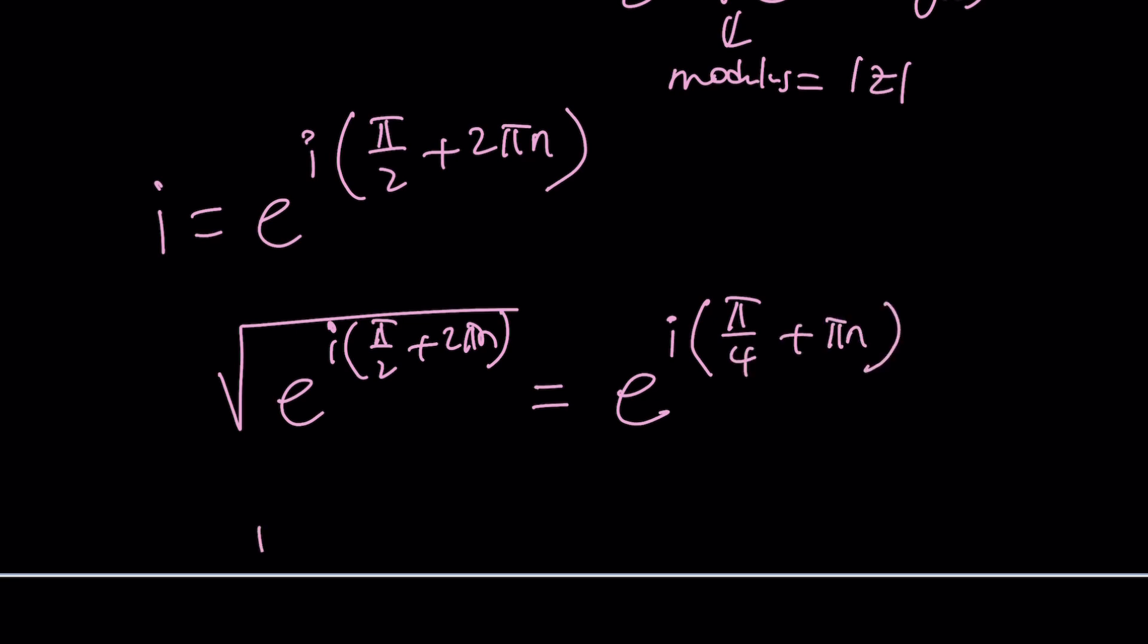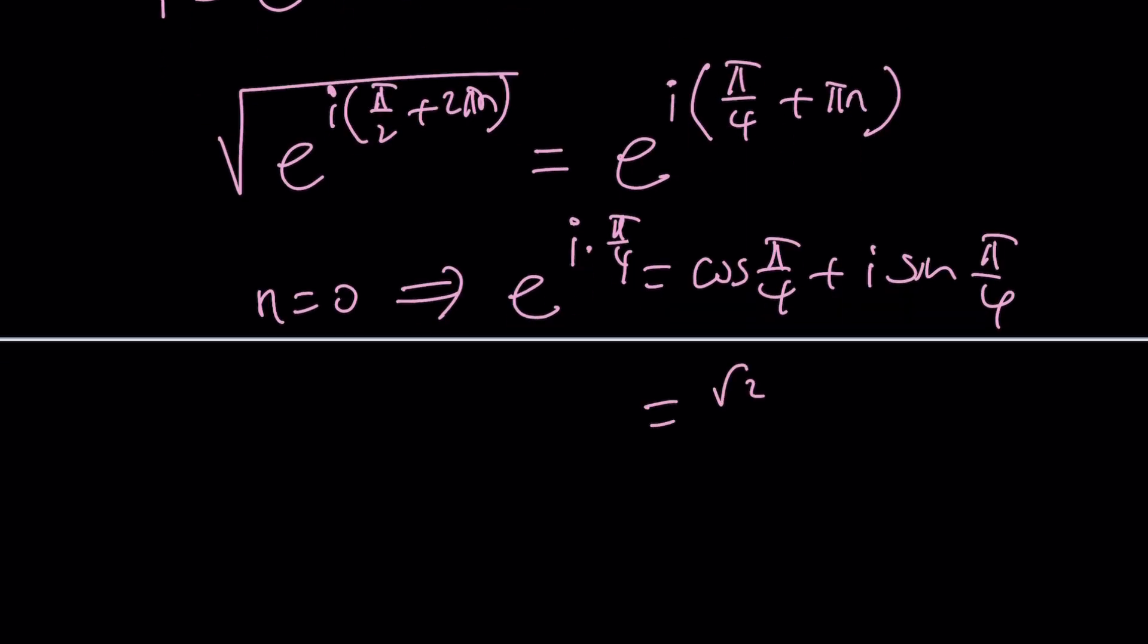Now if n is 0, this is going to give you e to the power i pi over 4, which is the same as cosine pi over 4 plus i sine pi over 4, and that is root 2 over 2 plus root 2 over 2 i. That looks familiar, doesn't it?